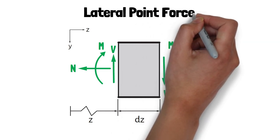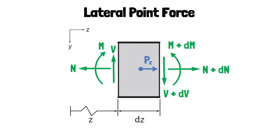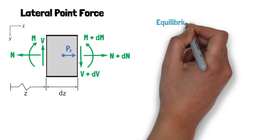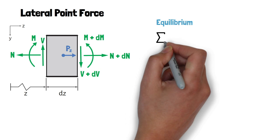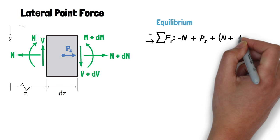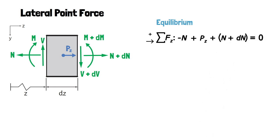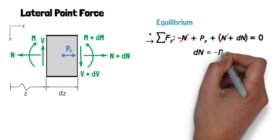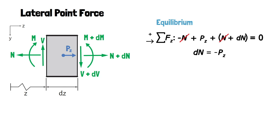We will start by analyzing the lateral loads, and specifically with a lateral point force acting in the center of the element. We can determine its effect on the internal loading by recognizing that if the beam is in static equilibrium, so too must the infinitesimal element of the beam. Starting with force equilibrium in the z direction, we choose forces acting to the right as our reference positive direction. The normal force on the left-hand side will be negative, while the applied point force pz and the n plus dn internal force on the right side will be positive. Here we can see that n cancels out, leaving us with the result that the variation in the internal force dn is equal to the negative lateral point force pz.